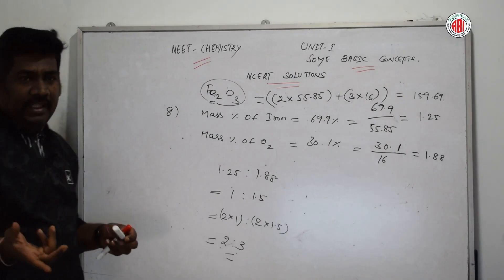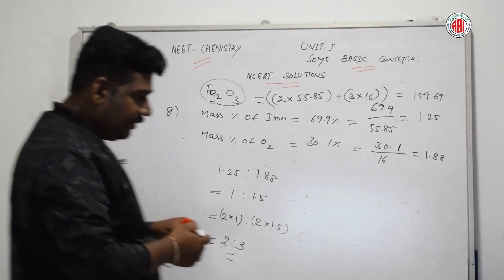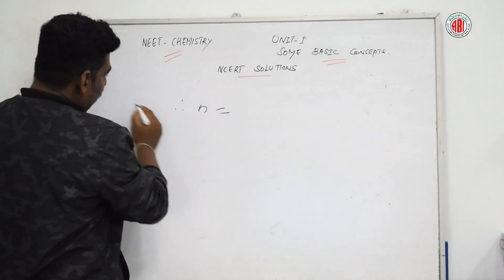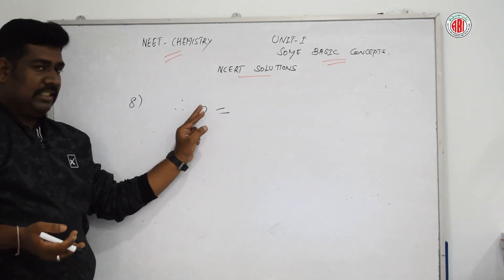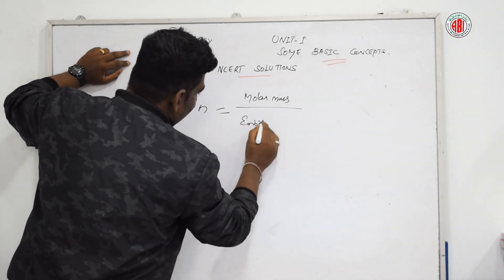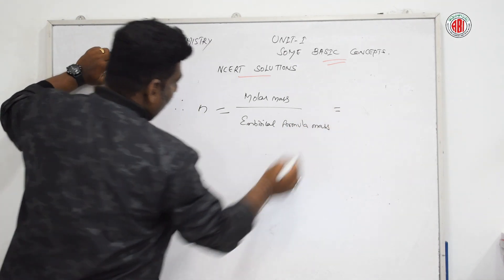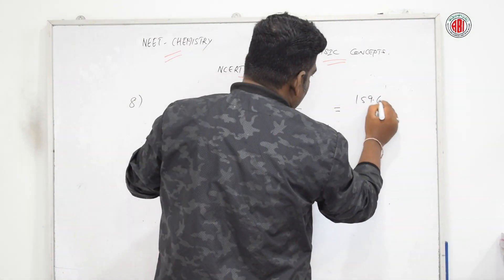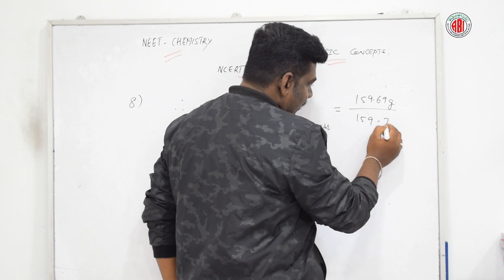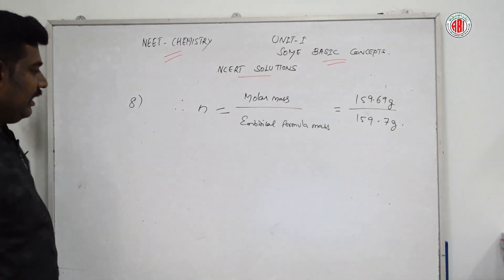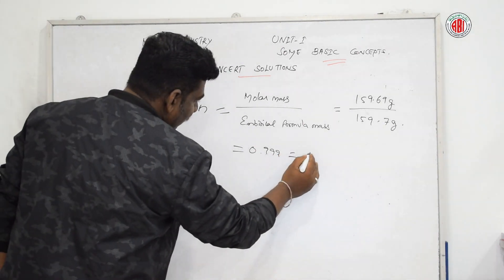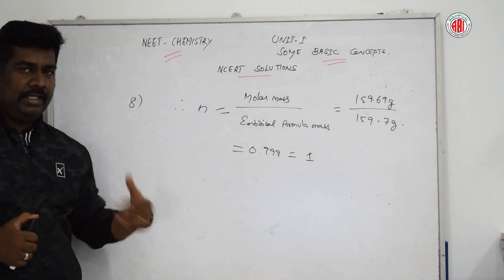To find the molecular formula, we use n = molar mass ÷ empirical formula mass = 159.69 ÷ 159.7 ≈ 0.999, which is approximately 1. Therefore the molecular formula is the same as the empirical formula: Fe₂O₃. Let us go to the next question.